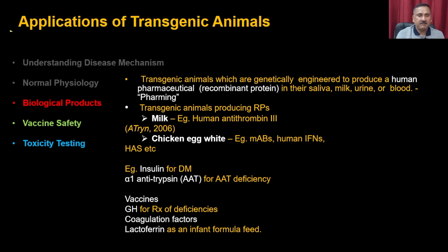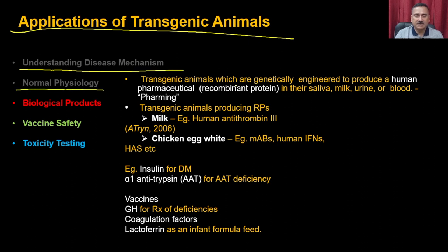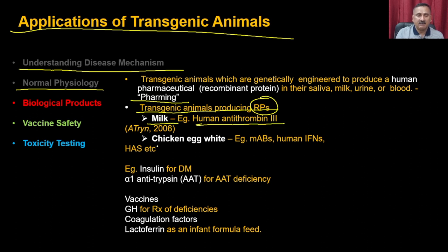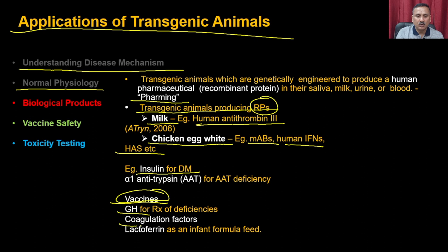The major applications of transgenic animals also include understanding normal physiology. Transgenic animals genetically engineered to produce human pharmaceutical products in their saliva, milk, urine, or blood are used in a process called pharming. Products include human antithrombin 3 from milk, monoclonal antibodies and human interferon gamma from chicken egg white, and insulin for diabetes mellitus. Transgenic animals are also used for vaccine production, including growth factors, coagulation factors, lactoferrin, and infant formula feed.